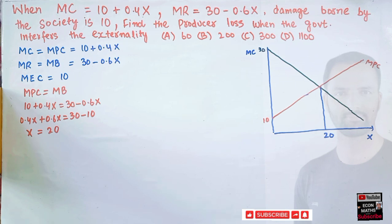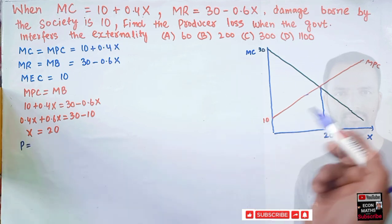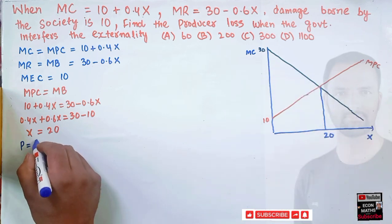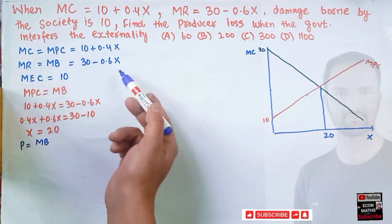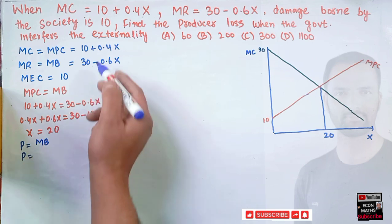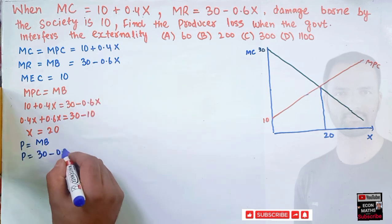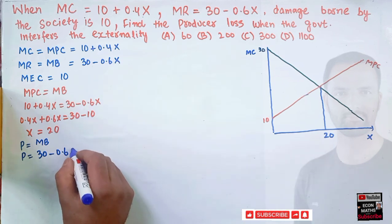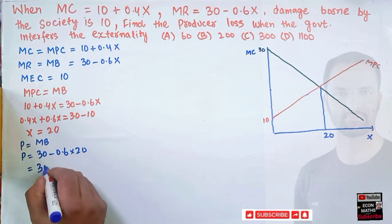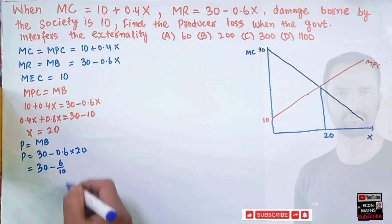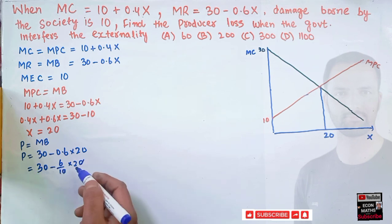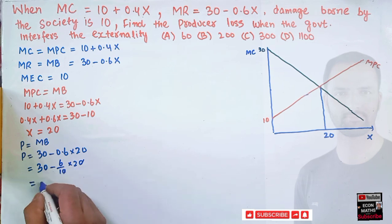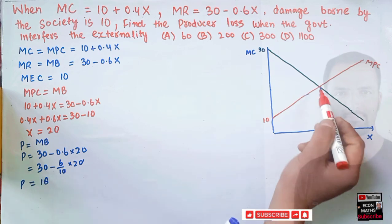The equilibrium price is found from the marginal benefit curve at x = 20: P = 30 − 0.6 × 20 = 30 − 12 = 18. So the initial equilibrium price is 18.